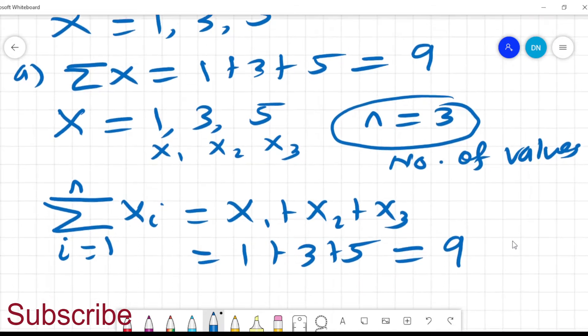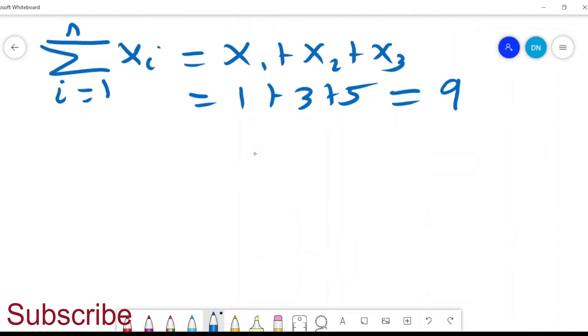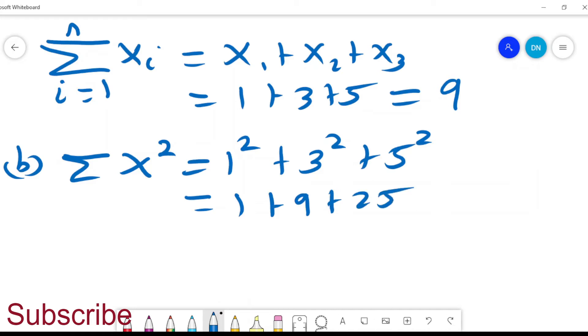For example, using the same values, somebody maybe says find summation of x squared. So it will be 1 squared plus 3 squared plus 5 squared, which will be 1 plus 9 plus 25, and that will be 35.